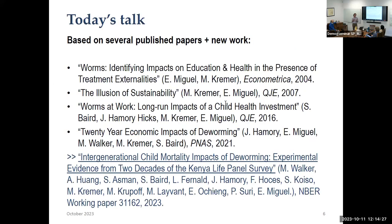This is based on a lot of published work and I'll touch on a bunch of different papers. Josh alluded to the older work with Michael Kramer on the deworming experiment — one of the first RCTs in development economics, which was cited in Kramer's Nobel announcement. Then a series of other papers in both economics and scientific journals. About half the talk will focus on the last paper, which is new and just submitted — on intergenerational child mortality impacts.